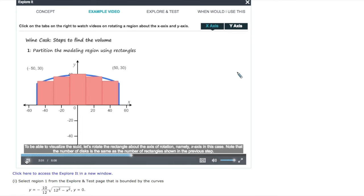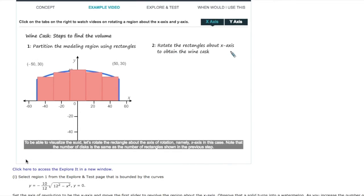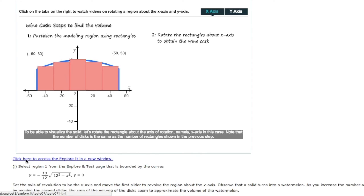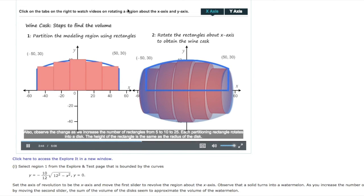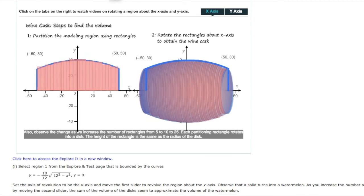To be able to visualize the solid, let's rotate the rectangle about the axis of rotation, namely the x-axis in this case. Note that the number of disks is the same as the number of rectangles shown in the previous step. Also, observe the change as we increase the number of rectangles from 5 to 10 to 25.